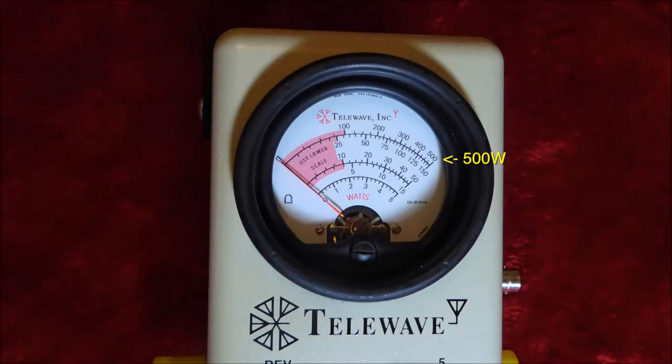As you can see, we have a 500-watt scale on the meter, and then just below that is a 150-watt scale. On the next scale down, we have 50 watts, and we also have a 15-watt scale for low-powered devices, and then for your HTs and so forth, we have a full-scale 5-watt. You need to pick the one that you need.